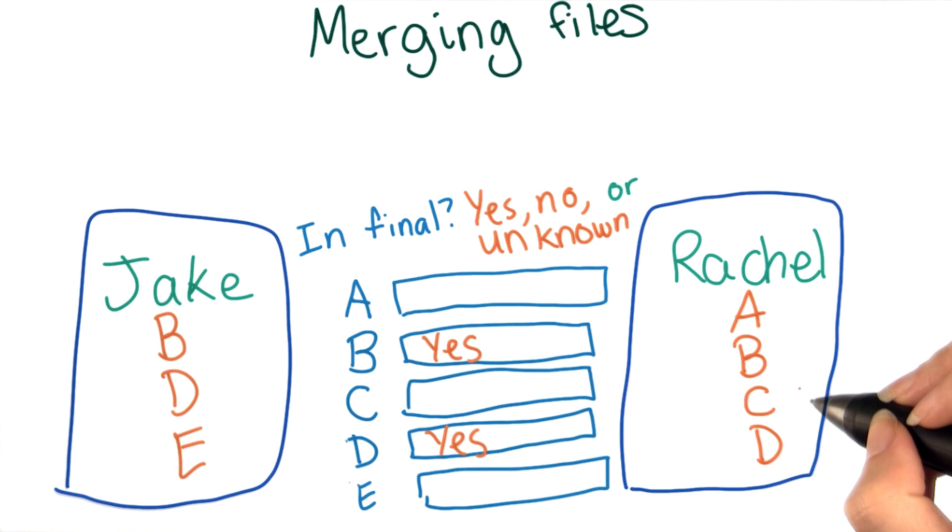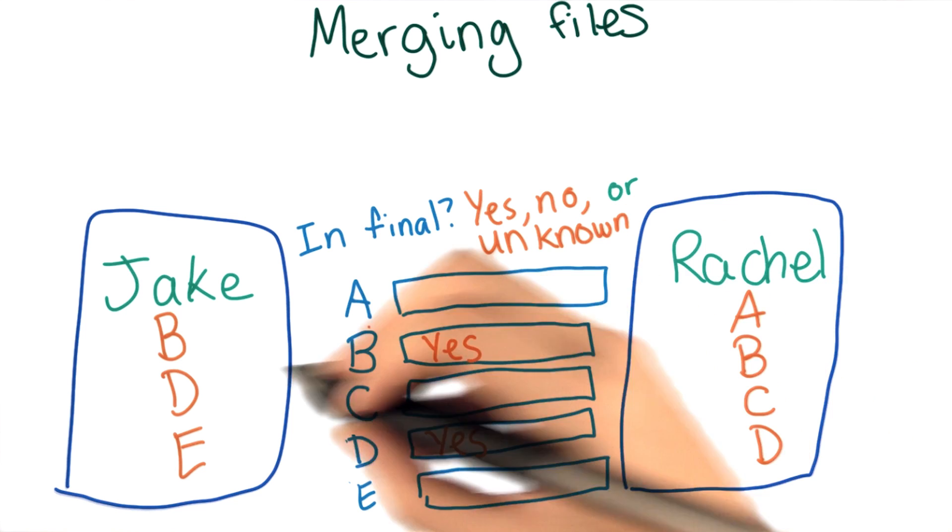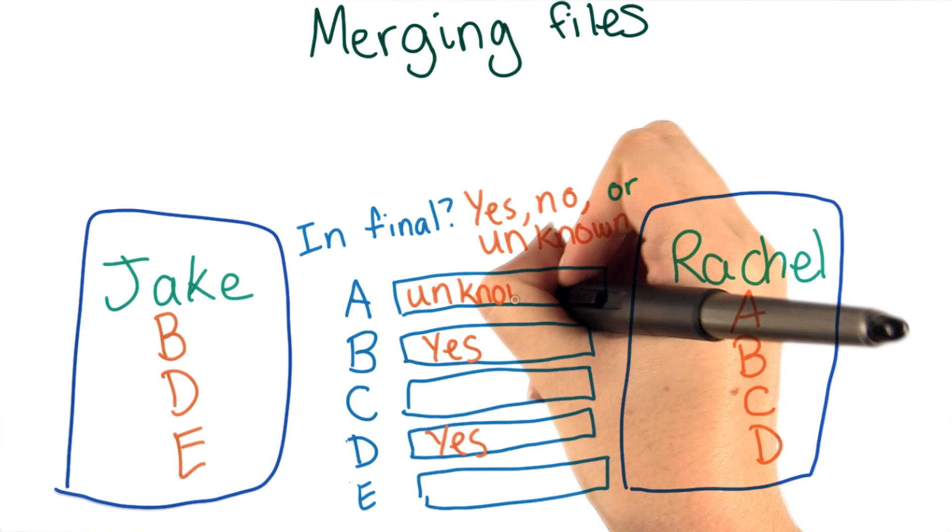So without any more information, we can't really tell whether A should be in the final version or not, so we mark it as unknown.